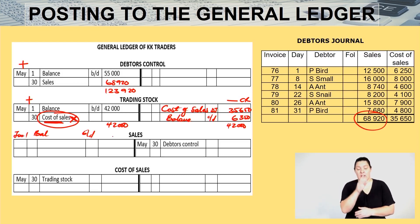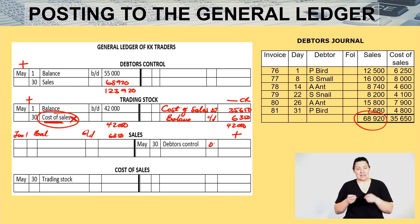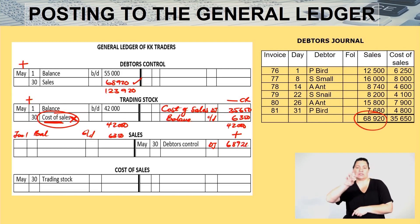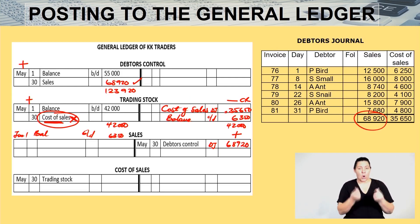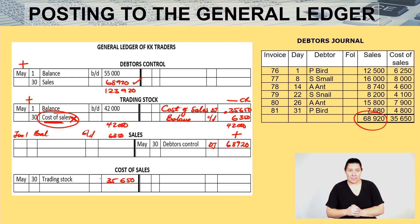I bring the balance brought down to June as 6,350. For sales, income increases on the credit side, so debtors control — DJ — 68,920. And the same amount brought into the trading stock account as cost of sales is 35,650. Then my general ledger will be complete.